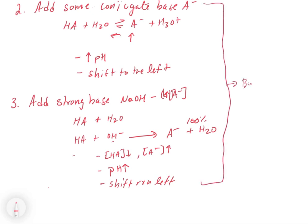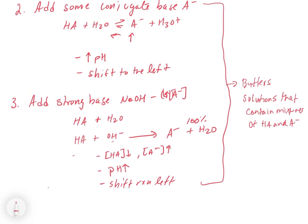Whether you add A minus directly or you add a strong base, both cases are pumping up the right-hand side and shifting the reaction to the left. When it re-equilibrates, we have HA plus H2O in equilibrium with A minus and H3O plus, except now we have a little bit more A minus in solution. It turns out these two cases are what we call buffers — solutions that contain mixtures of HA and A minus where the A minus concentration is raised above the equilibrium concentration. These are the possible outcomes from Le Chatelier's principle: adding an acid, adding some conjugate base, or adding a strong base. All of these outcomes lead to different effects on the equilibrium, and we're going to see these examples mathematically in the upcoming slides.